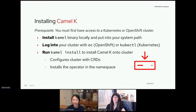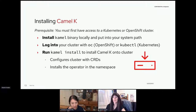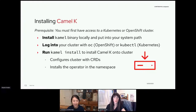Installing Camel K is as simple as it is to use. You need access to a cluster, then you install a very small Camel binary and you're done. If you have the OpenShift console, you can even install the operator through the UI.